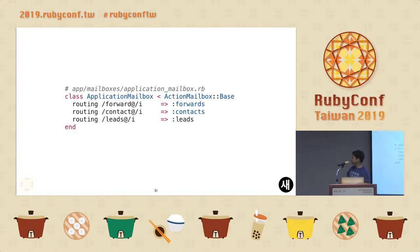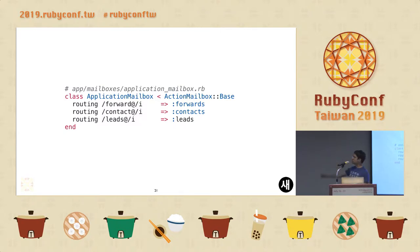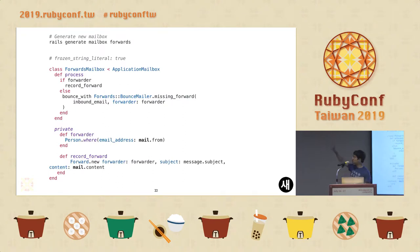To get started, the entry point would be the main application mailbox where you set the routing. Basically, you write patterns — for example, if an email contains 'forward@', you say to which mailbox this email should be processed. So if the email is from forward@whatever, it will be processed by the Forwards mailbox. After this matching is done, the routing works like Rails routes and will go to this Forwards mailbox, where you define just one single method: process.